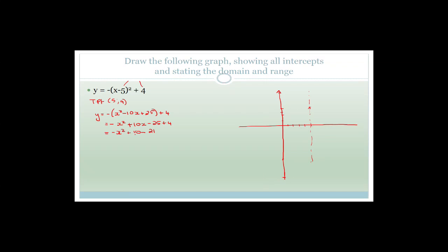So it cuts well below somewhere down here. Now we also need to find where it cuts the x-axis. We need to factorize this. We're going to let y equal zero. So we say zero equals minus x squared plus 10x minus 21. We can multiply through by negative, so we get zero equals x squared minus 10x plus 21. The factors of x are obviously x and x. We want factors of 21 that add up to 10 and when multiplied give 21. Factors of 21 are 21 and one, and seven and three. So obviously it had to be seven and three, giving minus seven and minus three, which means it goes through positive seven and three on the x-axis.